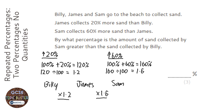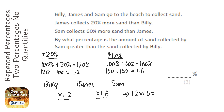So in total I'm doing times 1.2 times 1.6. Let's combine that into one multiplier: 1.2 times 1.6. Using a calculator, 1.2 times 1.6 gives the answer 1.92.